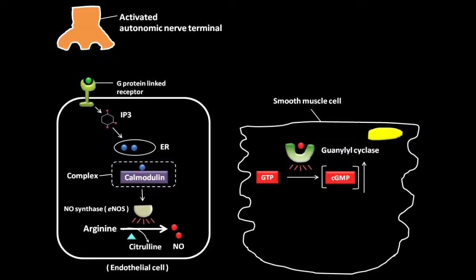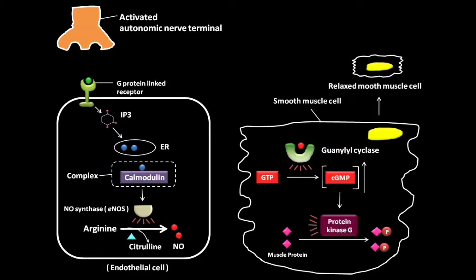This increase in cyclic GMP concentration activates the protein kinase G. This activated protein kinase G catalyzes a biochemical reaction in which appropriate muscle protein produces phosphorylated muscle protein. As a result, the smooth muscle cells get relaxed, which causes dilation of blood vessels.